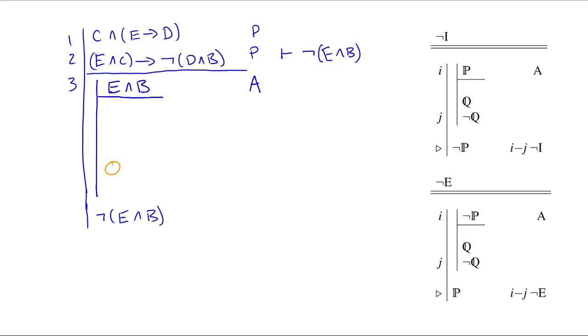Now in order to complete this subderivation, we're going to need to derive some sentence and the direct negation of that sentence. They don't necessarily have to be in that exact order. They can go not Q, then Q if we want them to. Now it might not be obvious right at the start what that contradiction is going to be, but we can get things moving in the derivation and see what turns up. So what we might do here is separate E from line 3 by AND elimination. And we can get the B out, also 3 AND elimination. Then perhaps we get the C from line 1 by AND elimination and get the E arrow D out of line 1 by AND elimination.